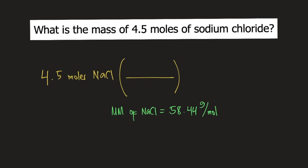So you put 1 mole at the bottom, and on top you put 58.44 grams. So moles of NaCl will cancel, and now we have grams of NaCl.